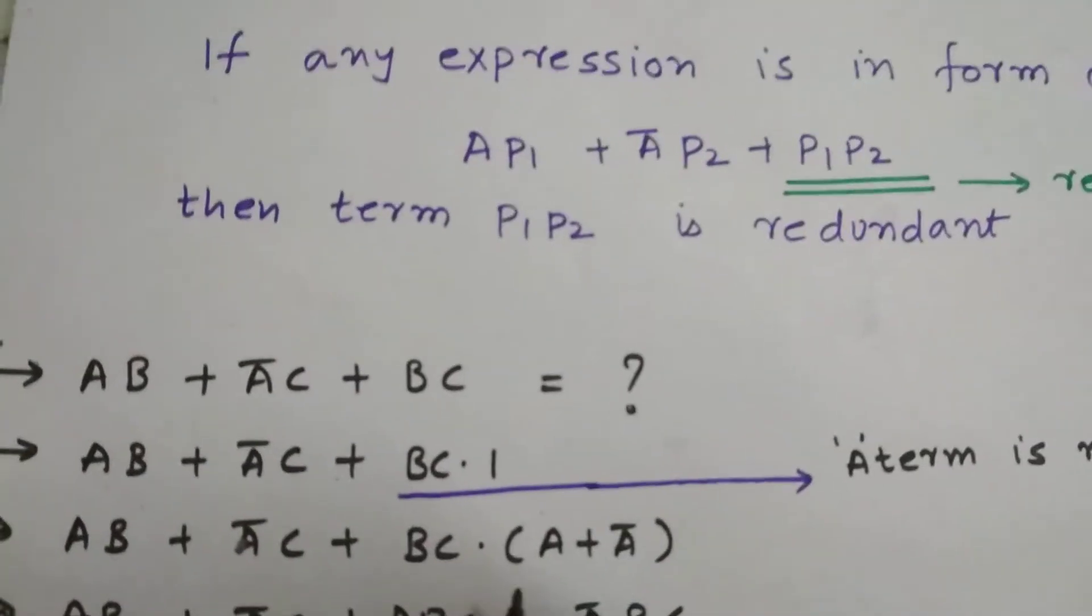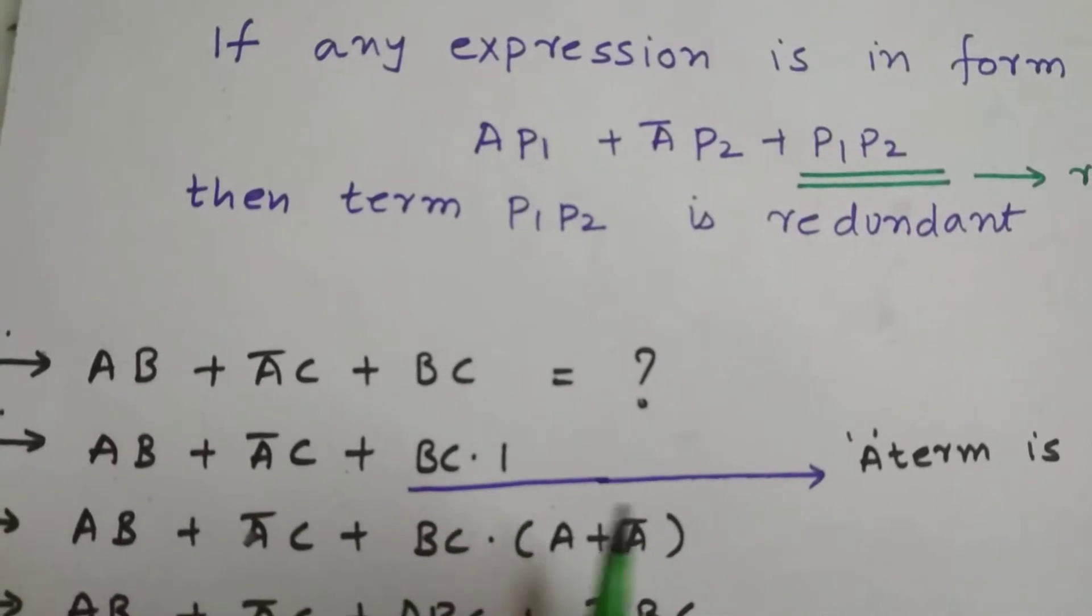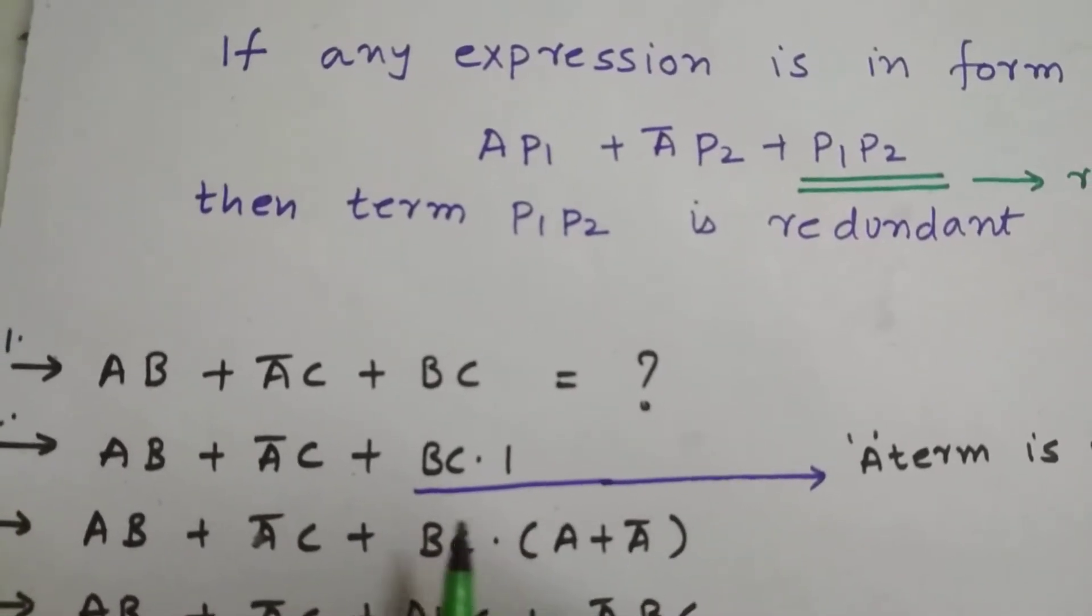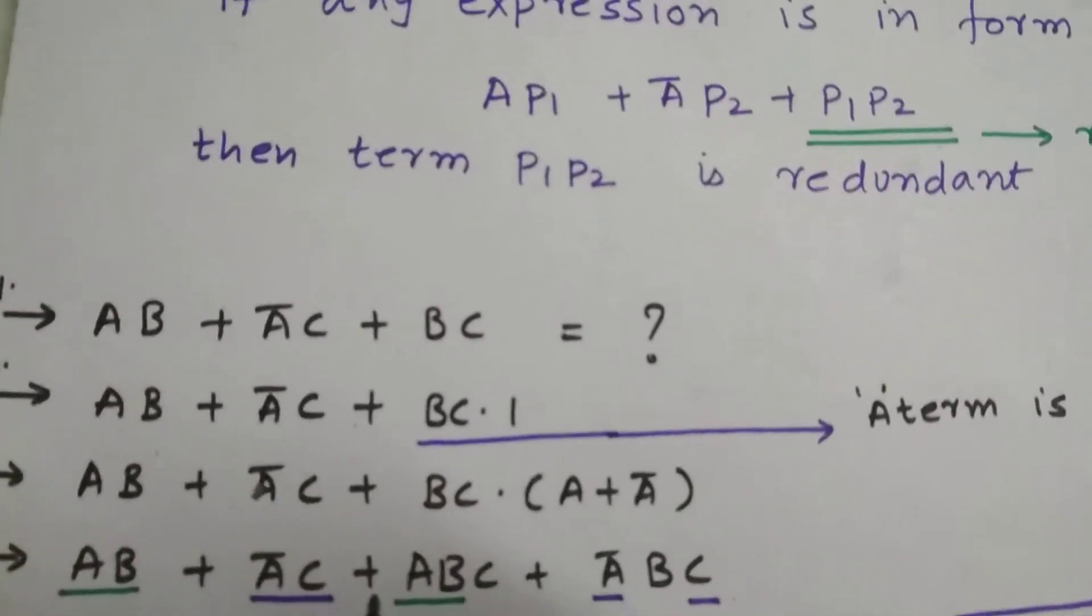As we know, A plus A bar is 1. So we multiply with this B and C and we get this one.